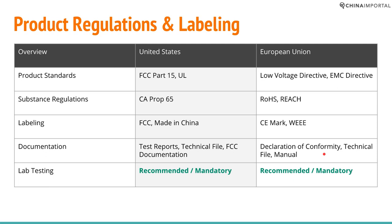The product must be labeled correctly, and you need the right documentation. If you don't have it, customs in your country can confiscate the goods. This is a fairly high-risk product category since it is an electric product. Foreign suppliers — for example, one in China — are not legally responsible for ensuring compliance in Europe, the United States, Australia, Singapore, or Malaysia.